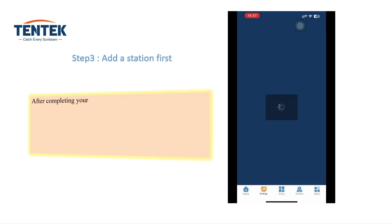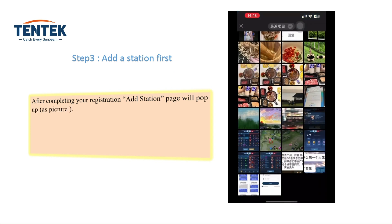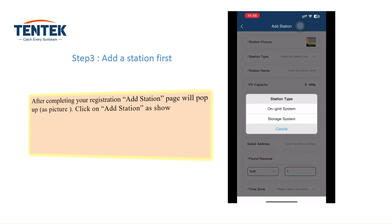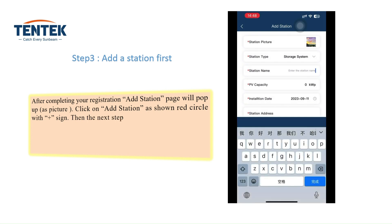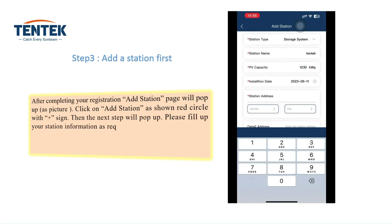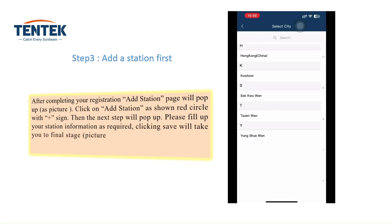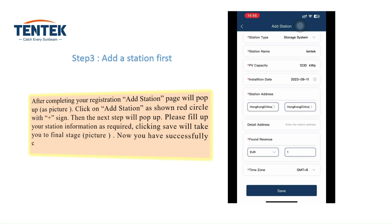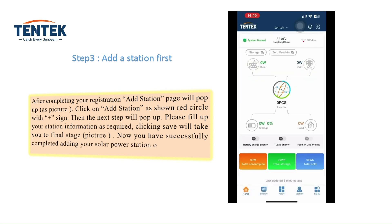Step 3: Add a station first. After completing your registration, the add station page will pop up. Click on add station, as shown by the red circle with the plus sign. Then the next step will pop up. Please fill up your station information as required. Clicking save will take you to the final stage. Now you have successfully completed adding your solar power station on T-Shine cloud monitoring system.